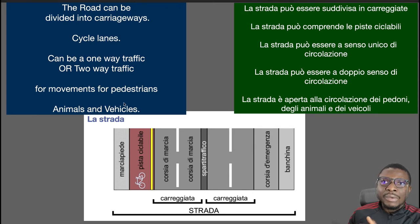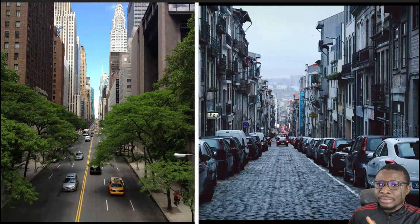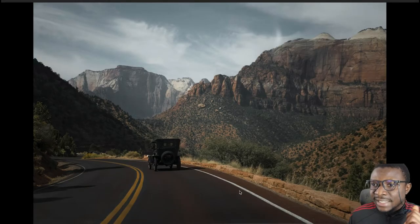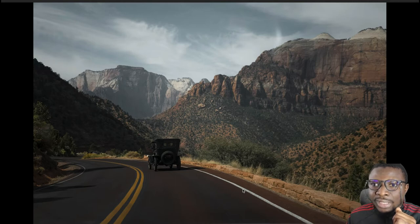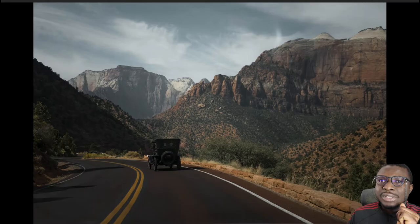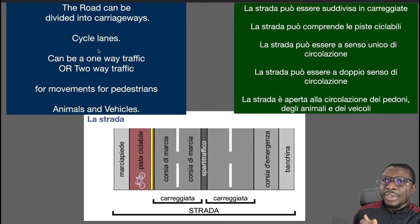Let's look at a photo of that. This is 'la carreggiata' — from this white solid line to this other white solid line. This part of the road is called 'la carreggiata'.